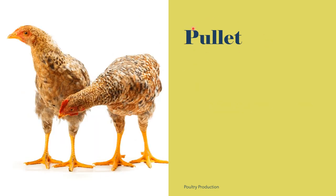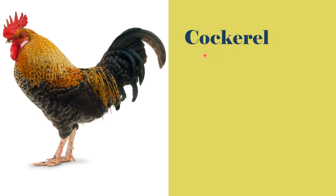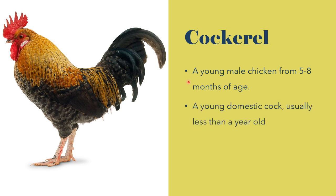Another term is the pullet. A pullet is a young female chicken from 9 to 20 weeks of age. It is also defined as a young hen that is under 1 year of age and has not started laying eggs yet. We also have the cockerel, which is a young male chicken from 5 to 8 months of age — a young domestic cock, usually less than a year old.